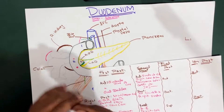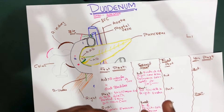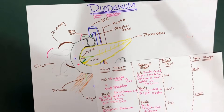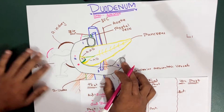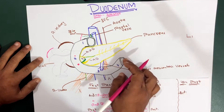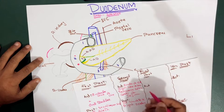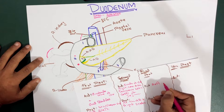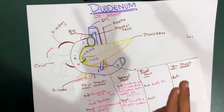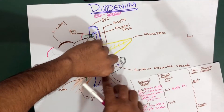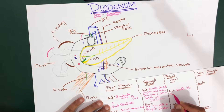If we talk about the anterior relations of the third part, we know the root of mesentery of the small intestine is present anteriorly. The root of mesentery starts from this junction and ends up at the ileocecal junction, crossing this guy. So anteriorly we have the root of mesentery. Another structure is the superior mesenteric vessels — you can see these superior mesenteric vessels crossing anterior to the third part. So we have two structures: the root of mesentery and the superior mesenteric vessels.